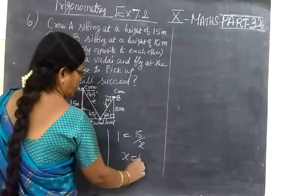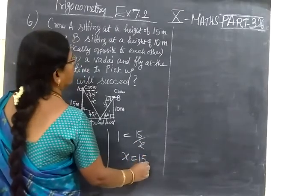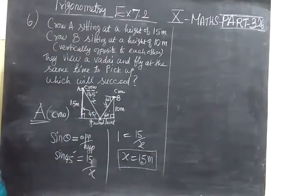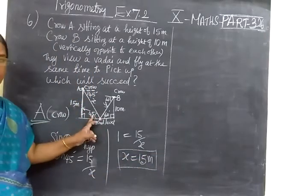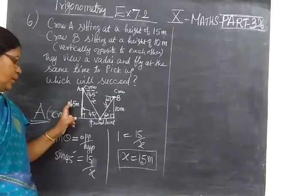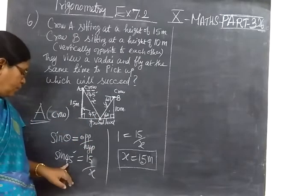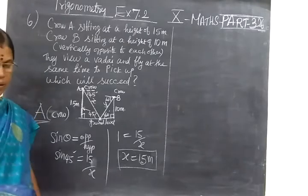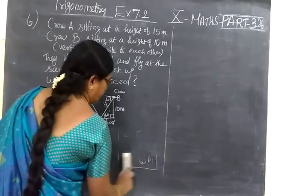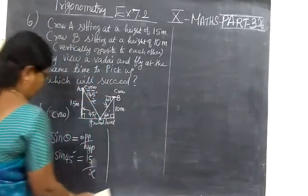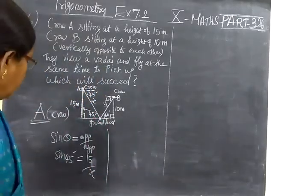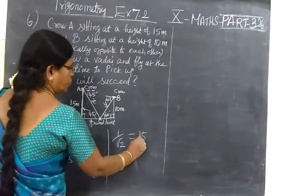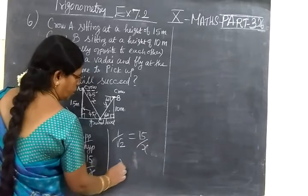S equals 15 root 2. If 45 degrees is given, we know opposite side and adjacent side are the same because tan 45 is 1. Sin 45 is 1 by root 2, so 15 by S. Cross multiplied, 15 into root 2. We have to multiply by 1.414.